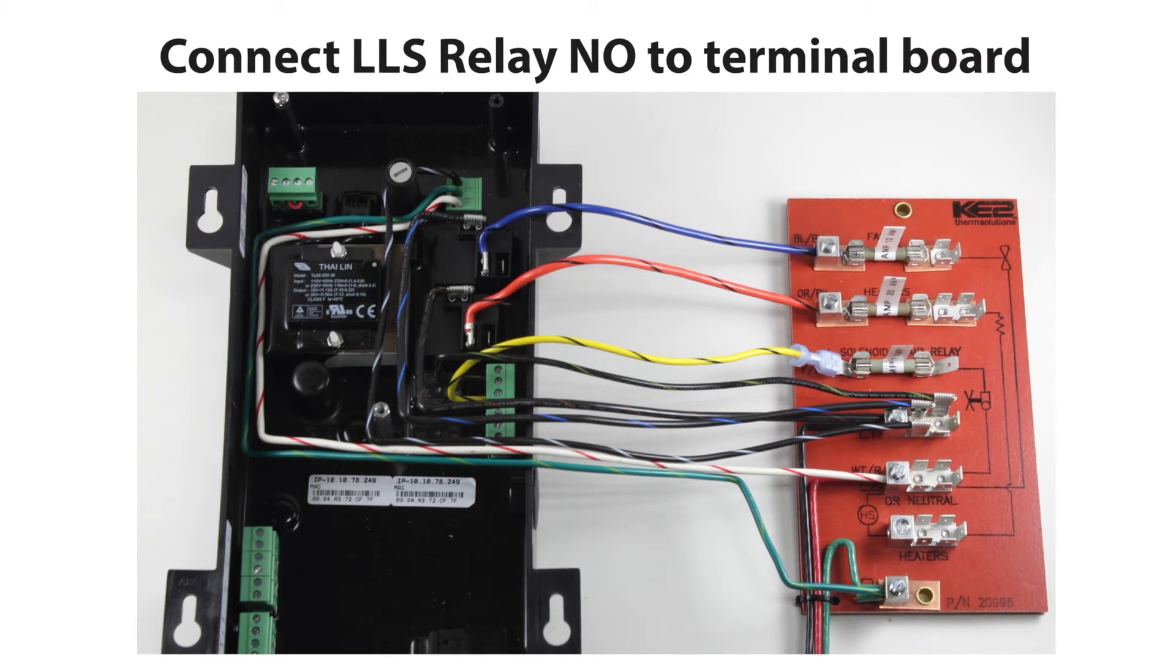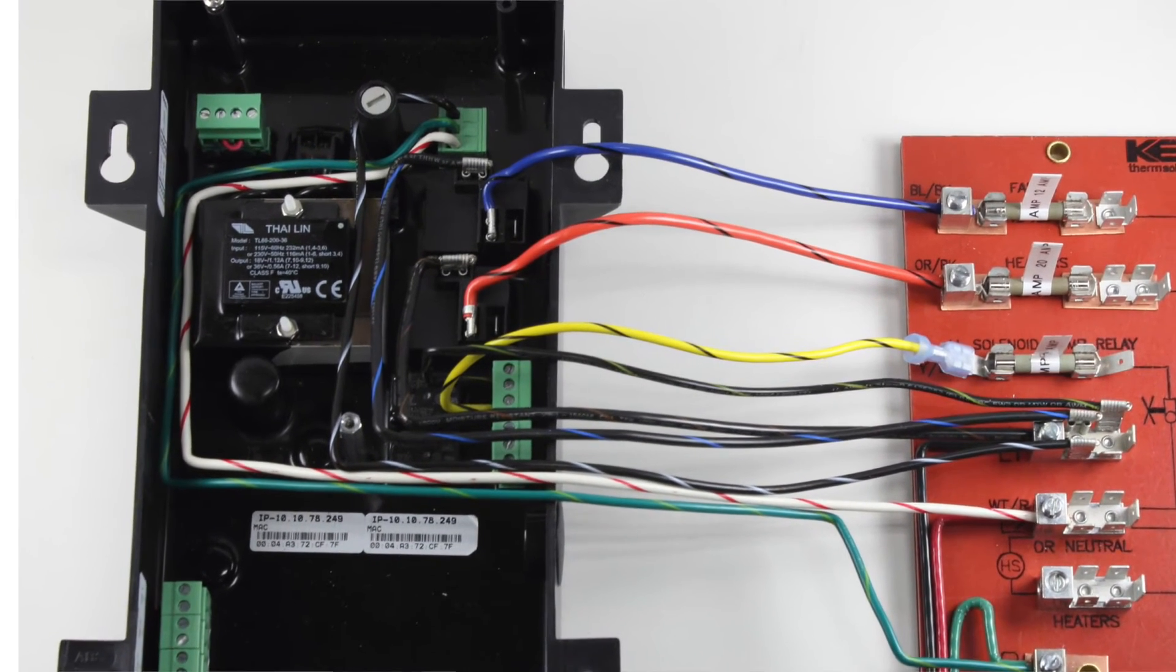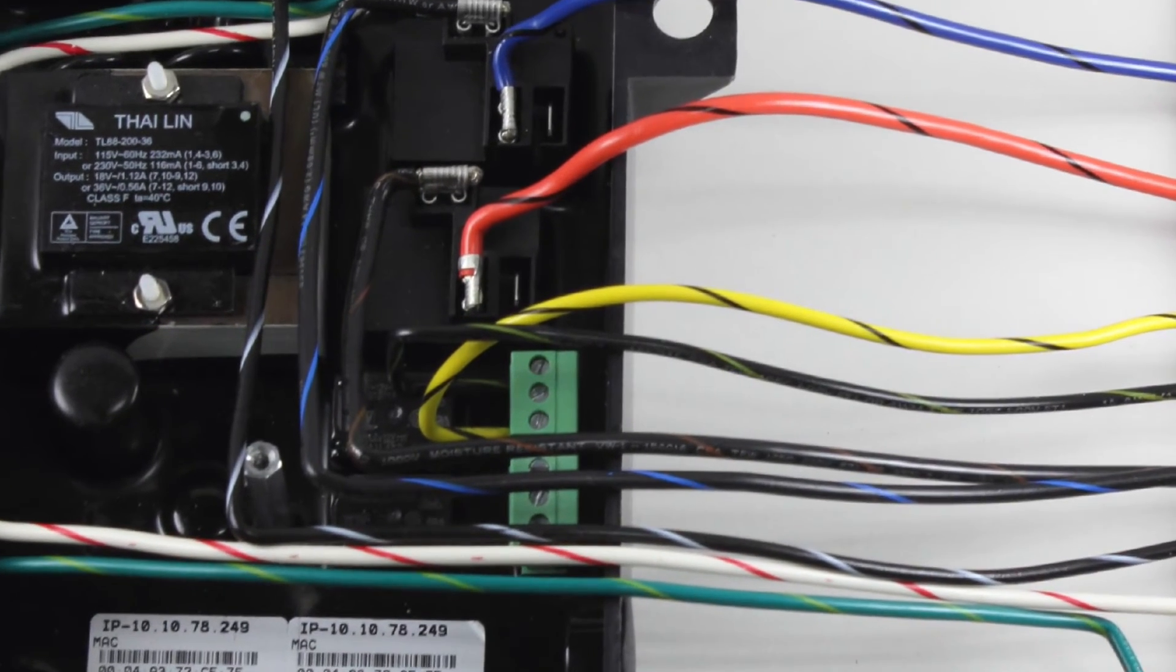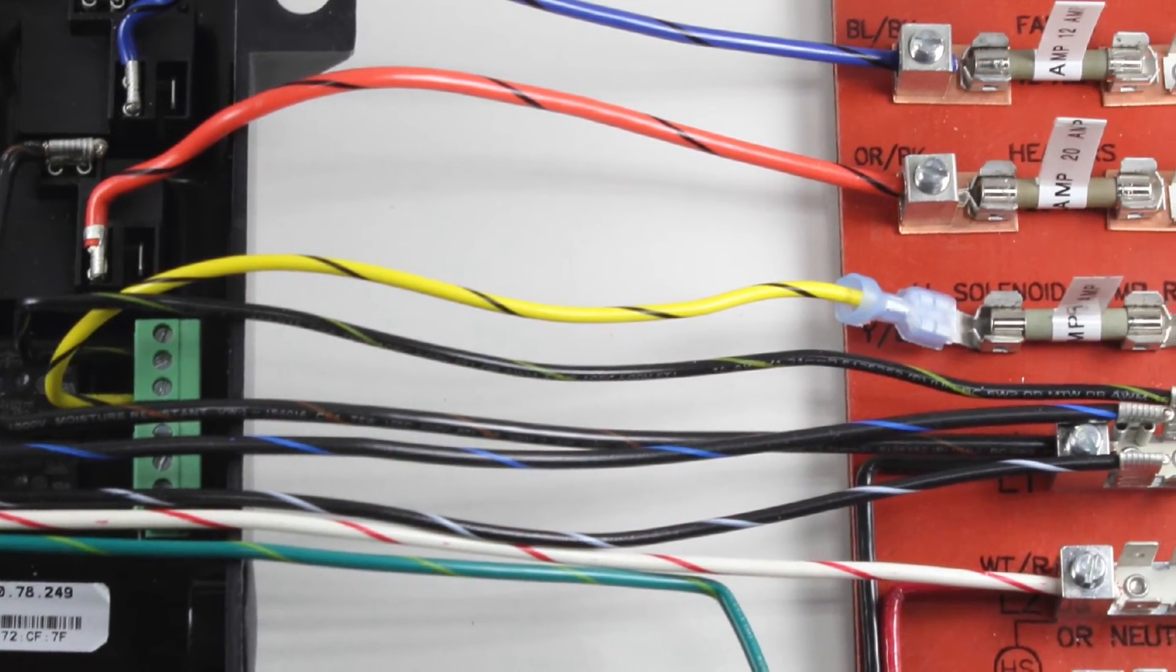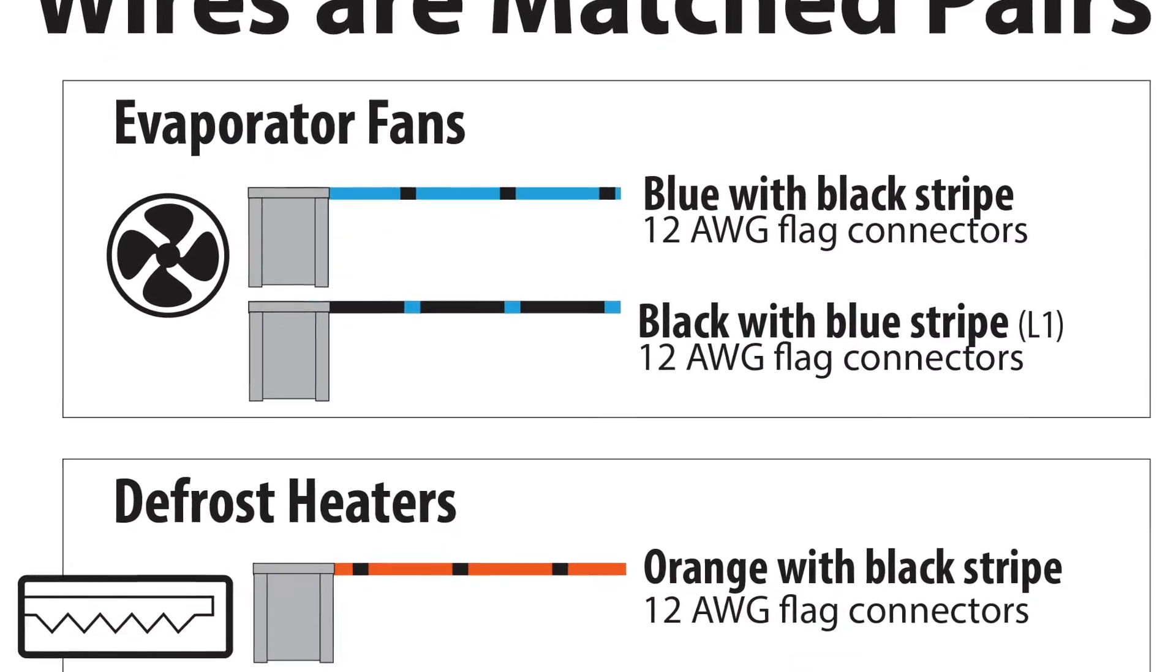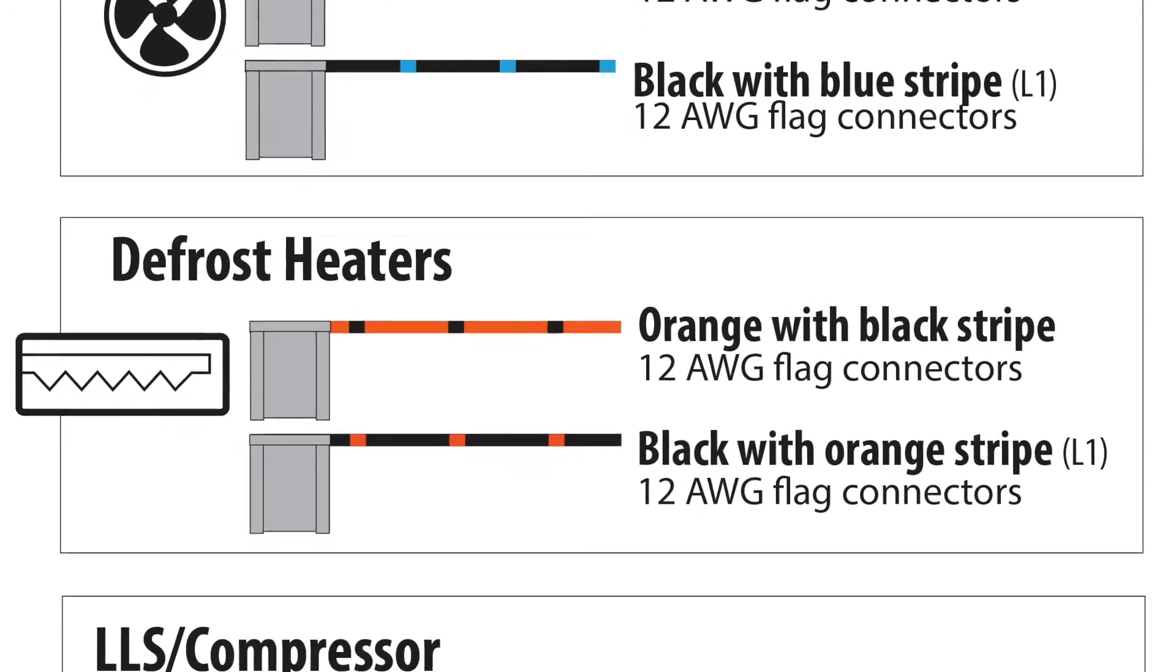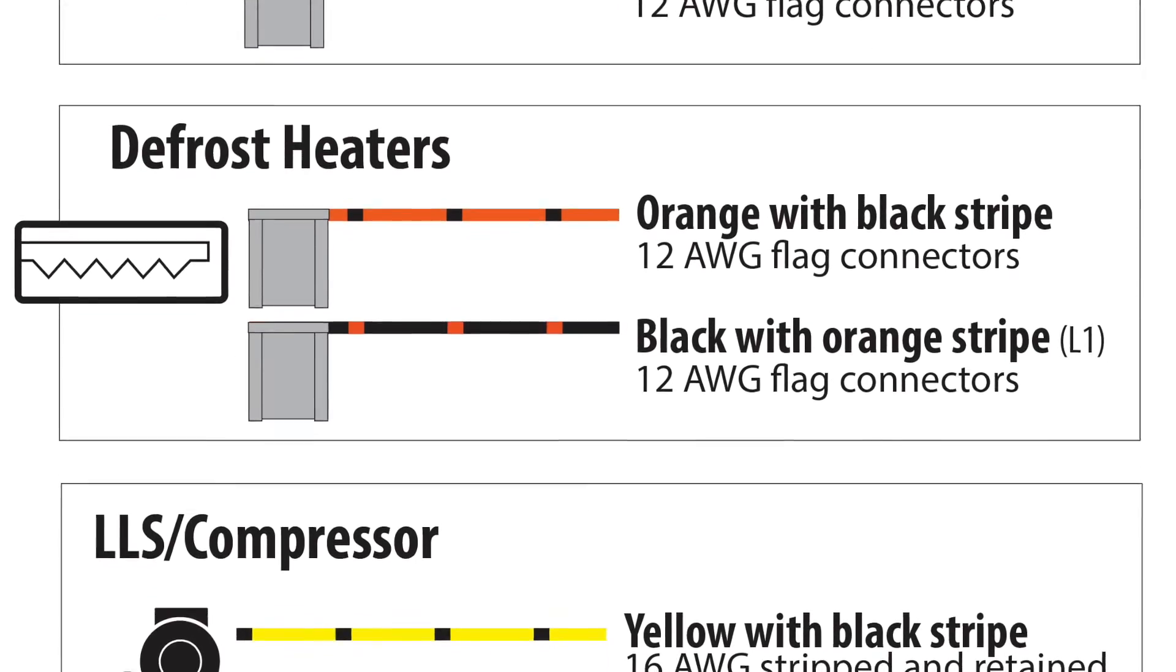Connect from the liquid line solenoid relay normally open set of contacts using the yellow with black stripe wire. Wire to the yellow with black location on the terminal board. You should notice the wires are color coordinated as matched pairs to keep the installation and service very simple.